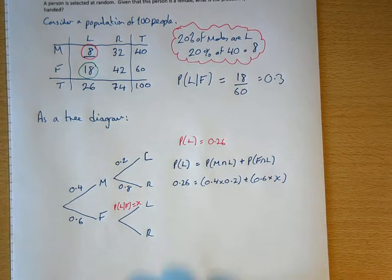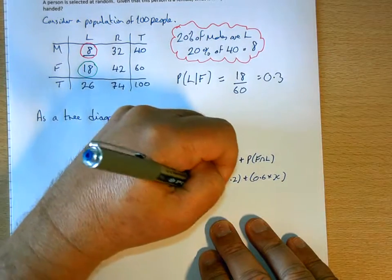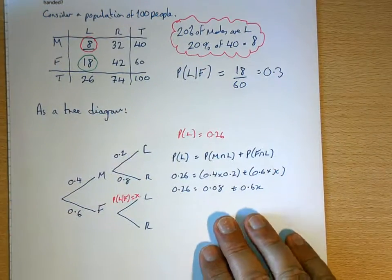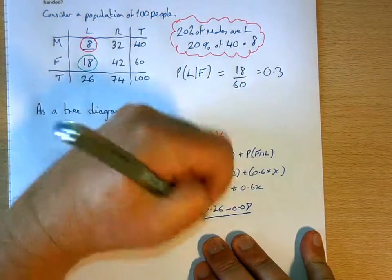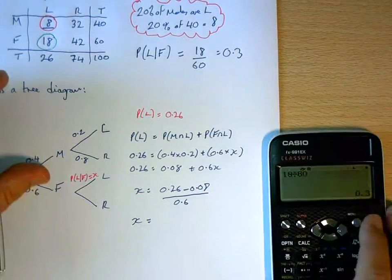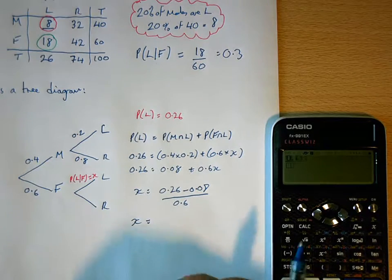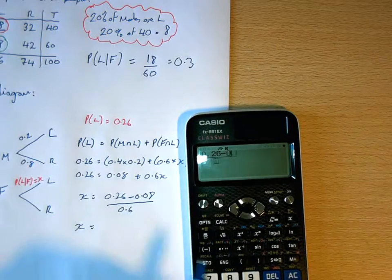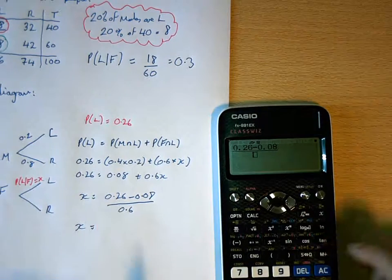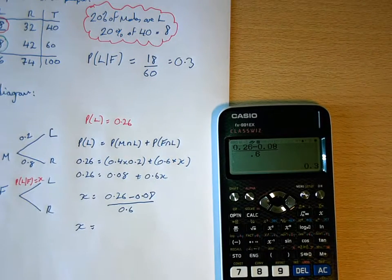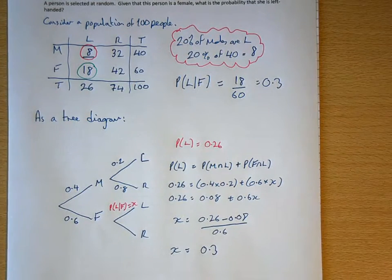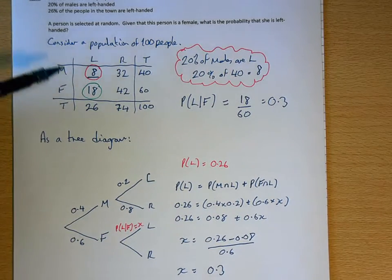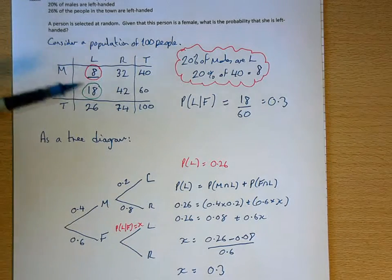We're forming an equation where the only unknown is x. So: 0.26 = 0.08 + 0.6x. Taking 0.08 over and dividing by 0.6 gives x = (0.26 − 0.08) / 0.6 = 0.3. Thankfully we've got the same solution using two entirely different approaches. You just need to be careful when all the information is given as percentages — don't confuse a percentage with a quantity.